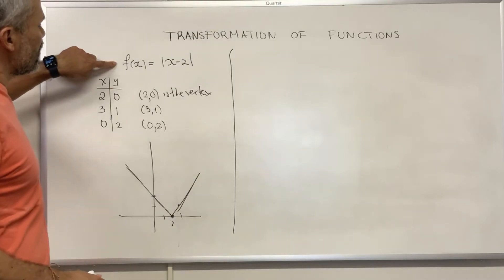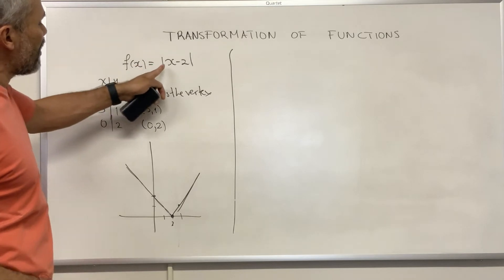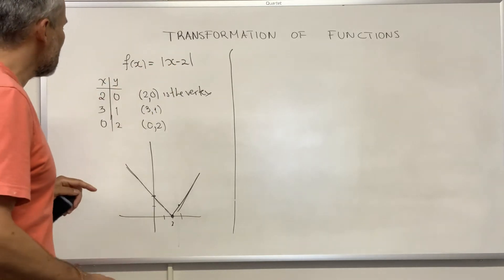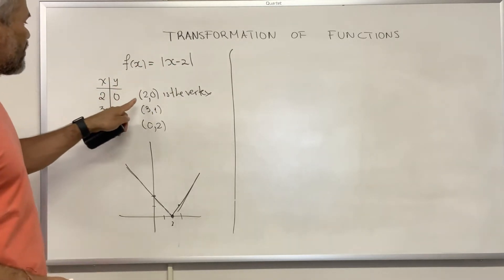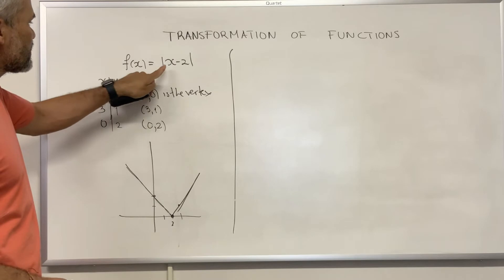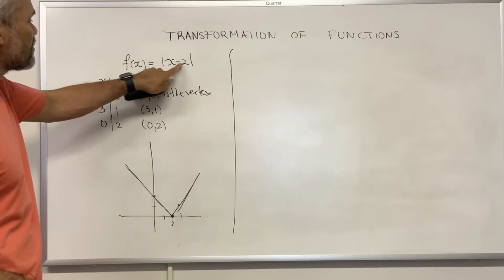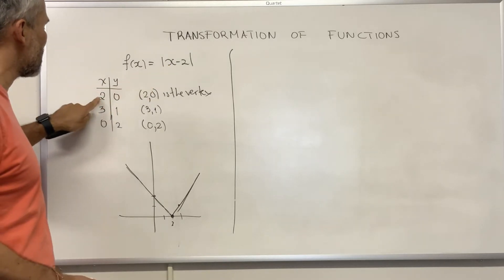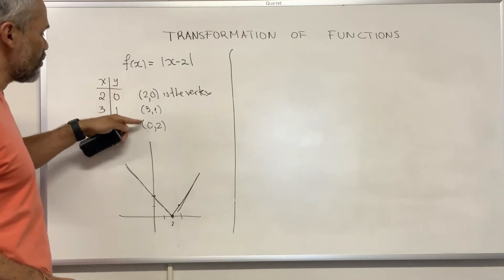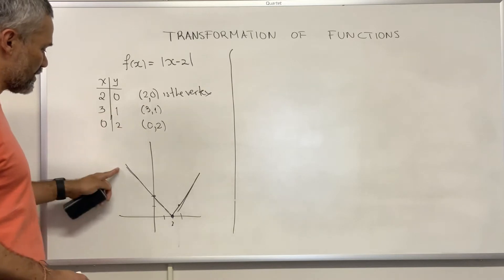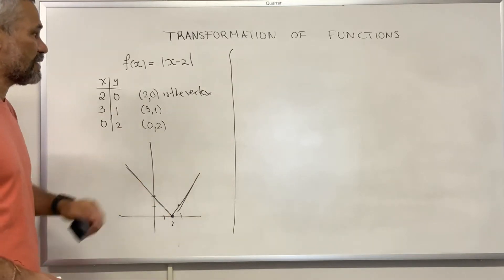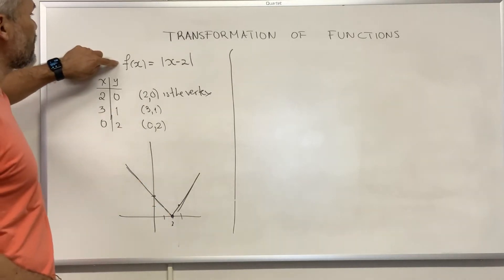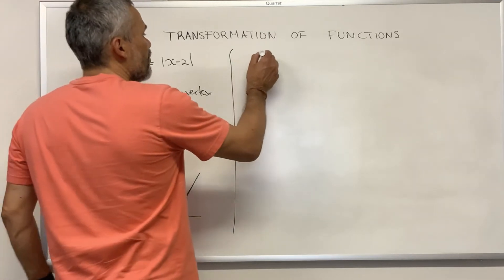Let's consider the function f of x equal absolute value of x minus 2. We know that the point (2, 0) is the vertex — that happens when x minus 2 is 0, meaning x equals 2. We can find two other points, and then the graph looks like this.